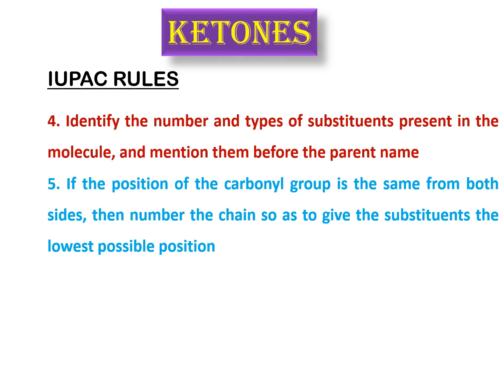You can have molecules in which the carbonyl group gets the same position from both sides — if it is present right in the center and the chain is substituted, then you have to keep in mind that the substituent gets the lowest possible position while numbering the carbon chain. First you check the position of the carbonyl group; if that can decide the direction of numbering, use it. If it cannot decide, then look for the position of the substituents and start numbering from the side where the substituents are closest.